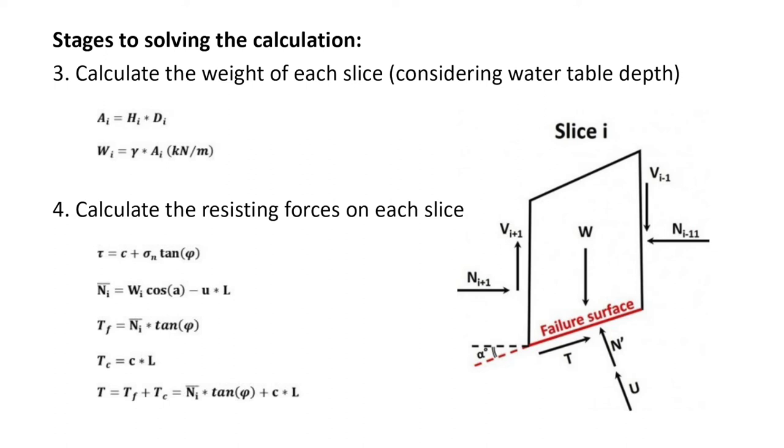The corresponding friction force is calculated using the effective normal stress and the friction angle. The cohesive resistance force is calculated using the cohesion and slice length. The overall resistance is calculated as the sum of the friction and cohesion resistance.